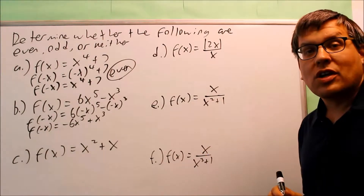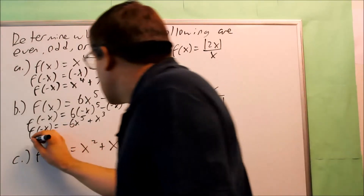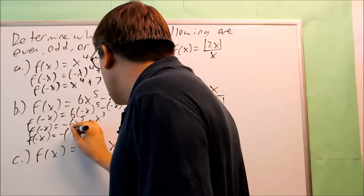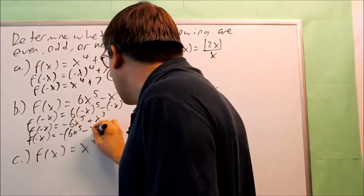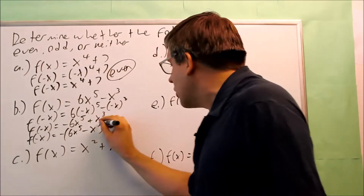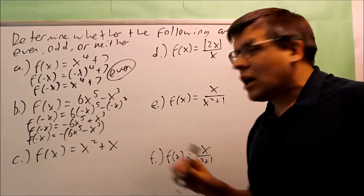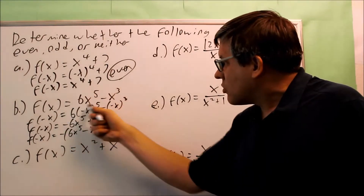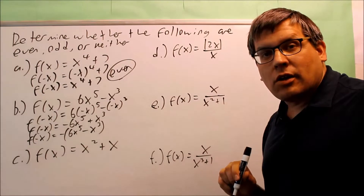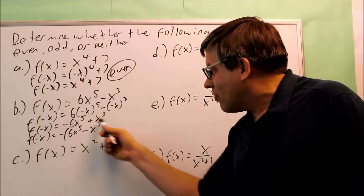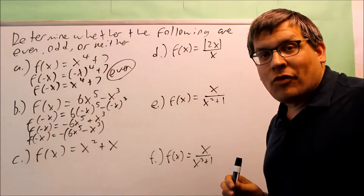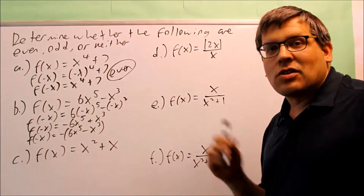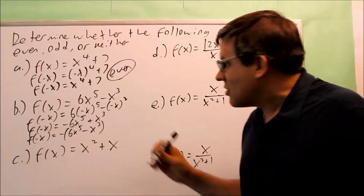Let's see what happens if we factor out a negative. So f of negative x — factoring out a negative — we get 6x to the fifth minus x to the third. With the negative on the outside, the inside is exactly the same as the original. So what we have is negative times f of x. Since f of negative x equals negative f of x, that's the definition for odd. This is an odd function.